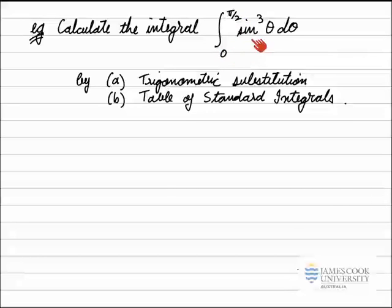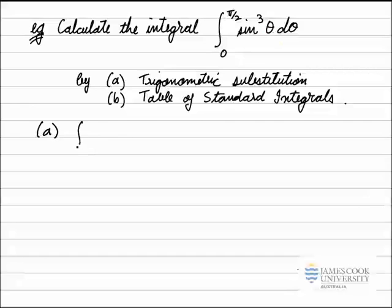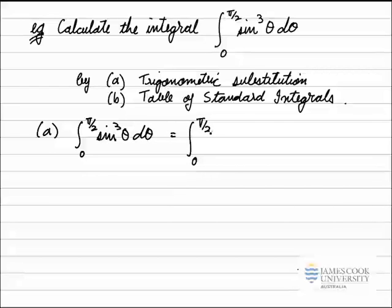First of all, I remember that this is a sine function raised to the power of three, which is an odd value. So this is an odd power of sine theta. For Part A, my integral goes from zero to pi on two of sine cubed theta d theta. The usual method for this integral is to break the cube up into a sine squared and a sine.